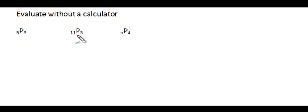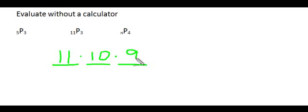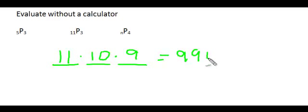If we are calculating 11 objects taken 3 at a time, we could do it the same way, but it is much faster to just take our 3 slots and do 11 choices for the first slot, times 10 choices for the second slot, times 9 choices for the third slot, which is 990 permutations.